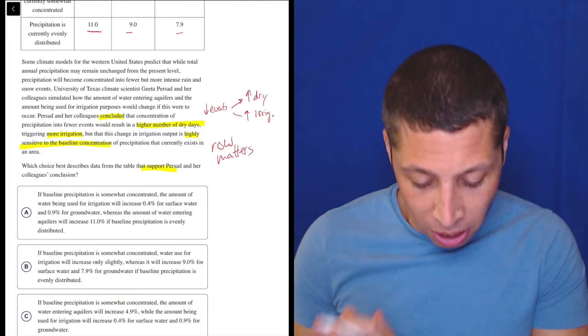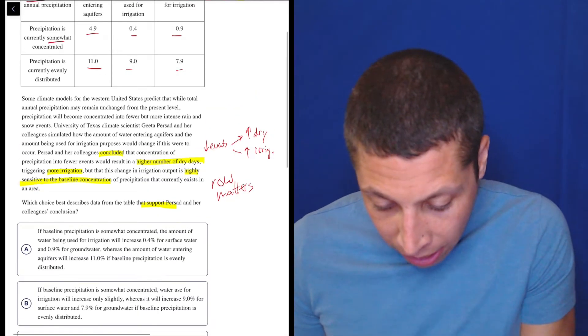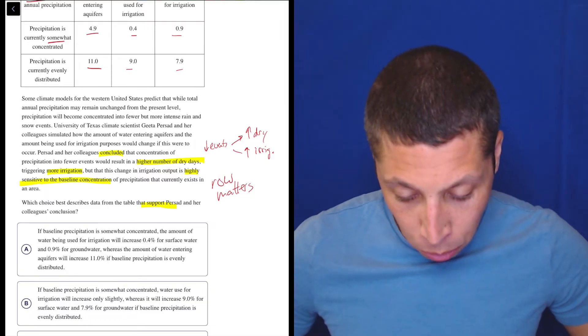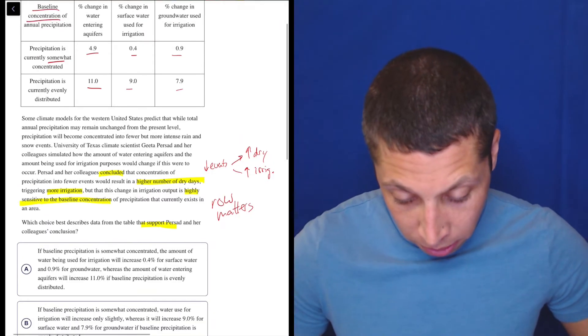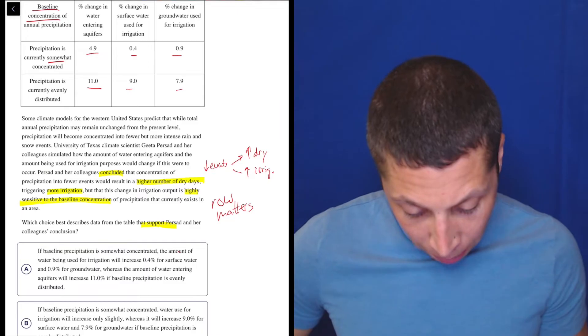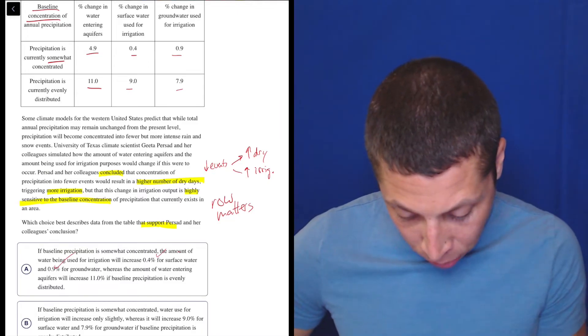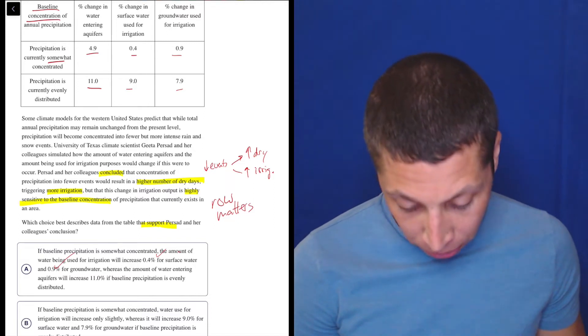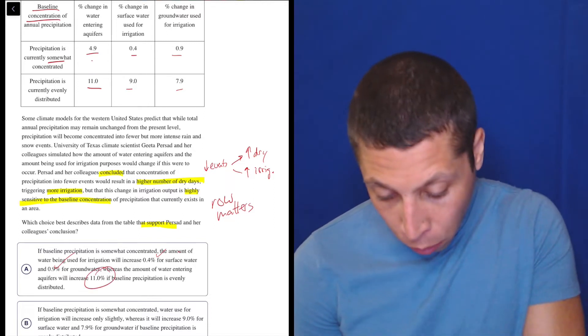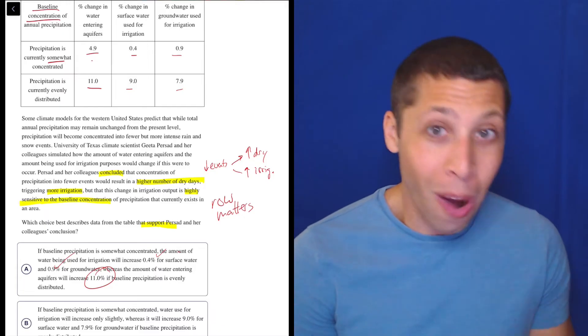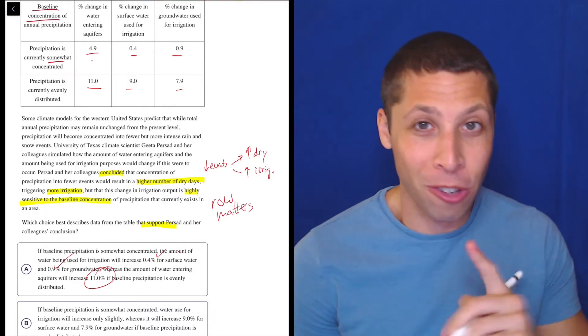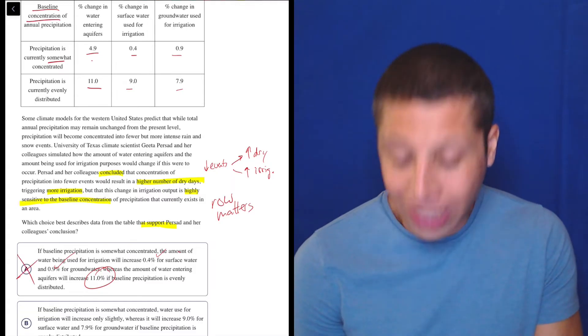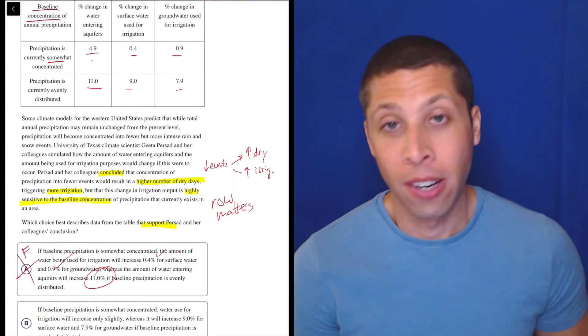They're telling us that there's two different rows here of data and those rows correspond to the different ways that we can have a baseline concentration. And so each row has a different set of numbers. Some are big, some are small. Let's look and see what we get. Choice A: if baseline precipitation is somewhat concentrated, the amount of water being used for irrigation will increase 0.4% for surface water. That seems true. And 0.9% for groundwater. That seems true. Whereas the amount of water entering aquifers will increase 11%. No, it's 4.9. So this is why some of these questions about charts and graphs are really easy. It's literally just looking in the right row and column. That's just factually incorrect. This is false based on our chart.